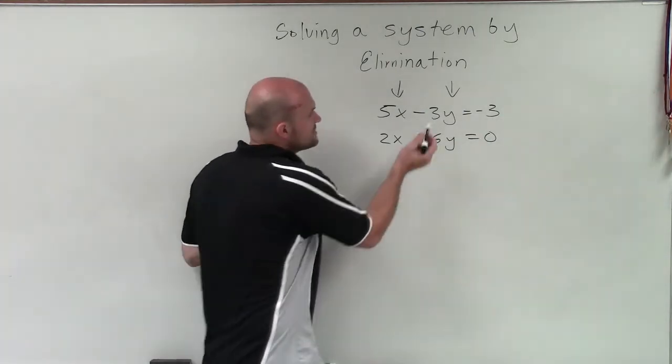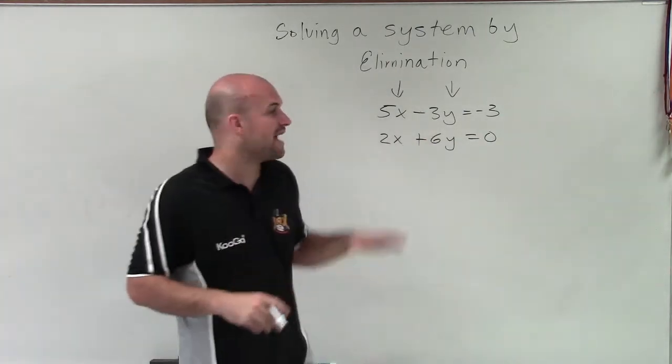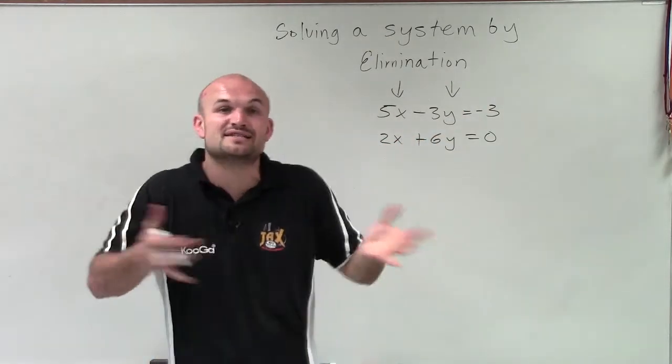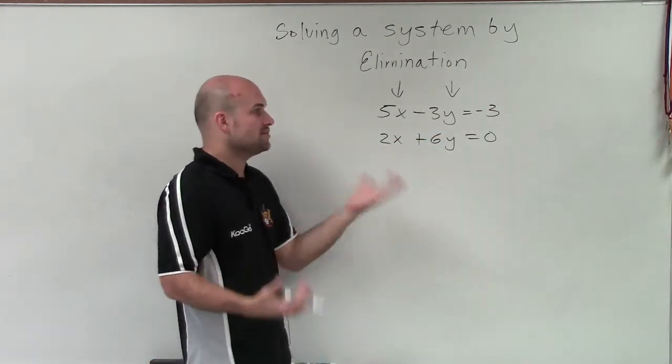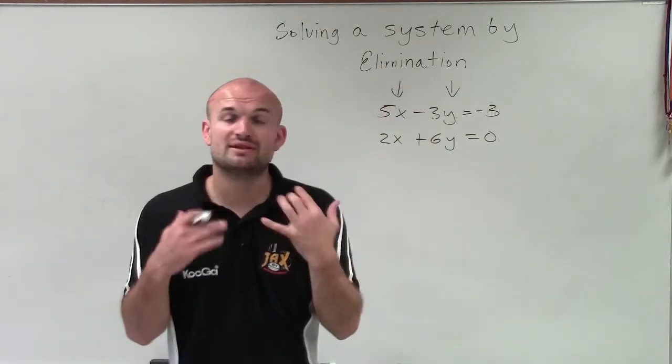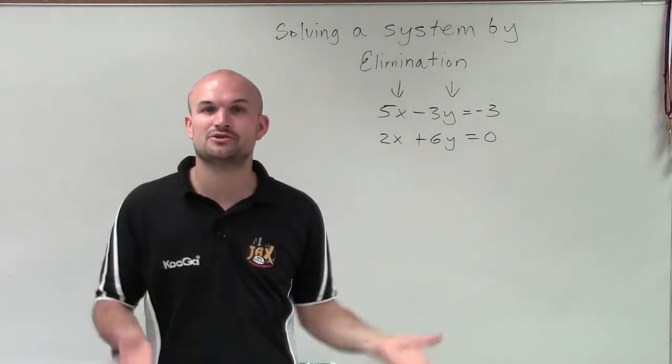Now, since this is negative and this is positive, I don't have to multiply my multiplier by a negative to make sure it's positive 6. I can, but it's OK if I have a positive and a negative coefficient, as long as they are the same value. What that means, again, is I just add my two equations.